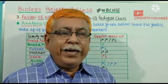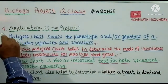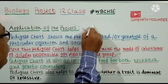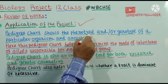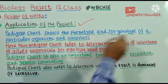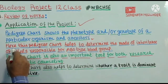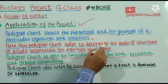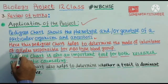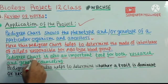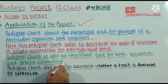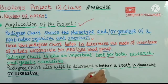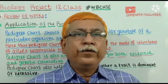Number 4 — Application of the project. A pedigree chart shows the phenotype and/or genotype of a particular organism and its ancestors. This pedigree chart helps to determine the mode of inheritance of alleles responsible for ABO type blood group. A pedigree chart is also an important tool for both research and genetic counseling. It also helps to determine whether a trait is dominant or recessive. You may add a few more points here.